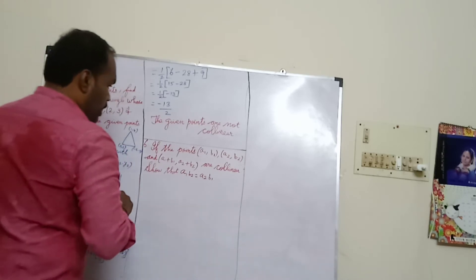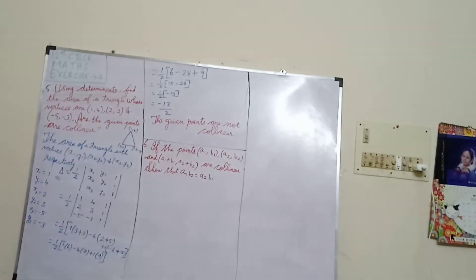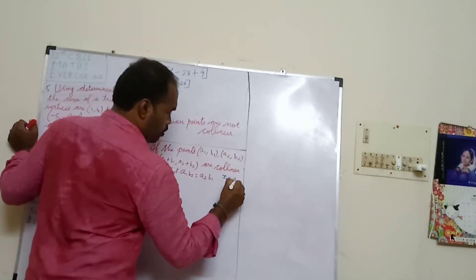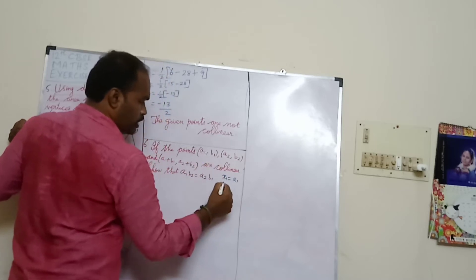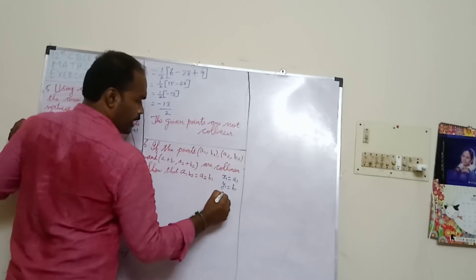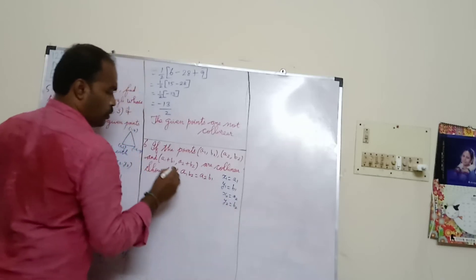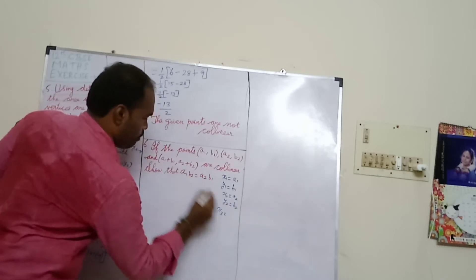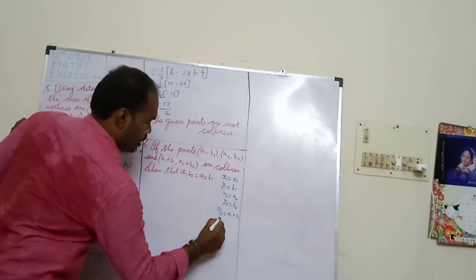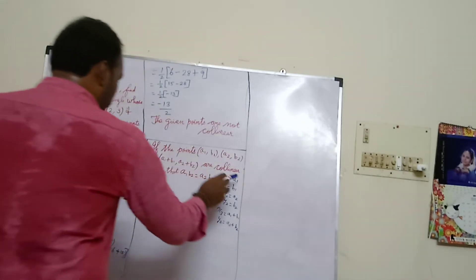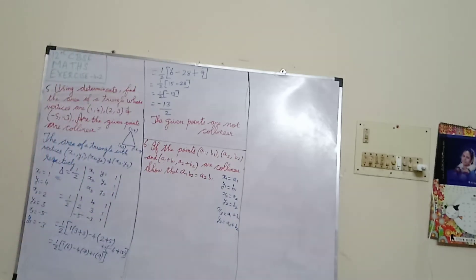Since the points are collinear, we need to write the coordinates. x1 = a1, y1 = b1, x2 = a2, y2 = b2, x3 = a1+a2, y3 = b1+b2. The question asks us to prove a1·b2 = a2·b1.